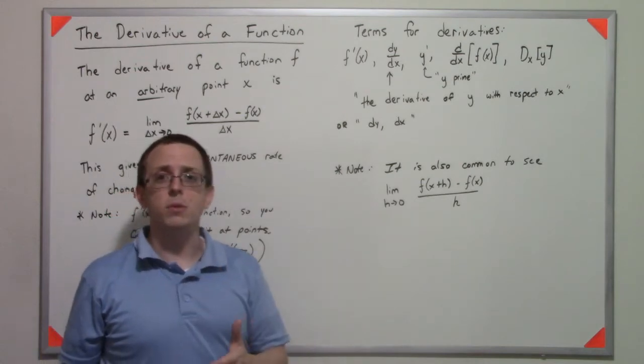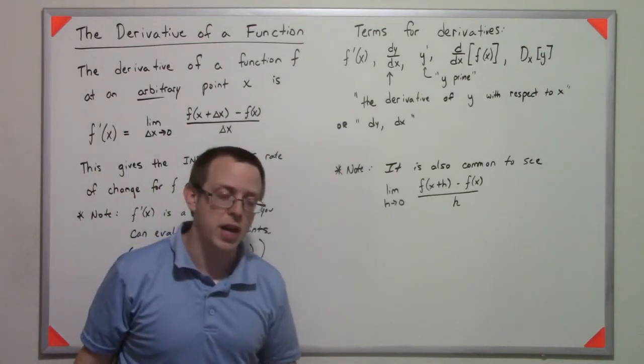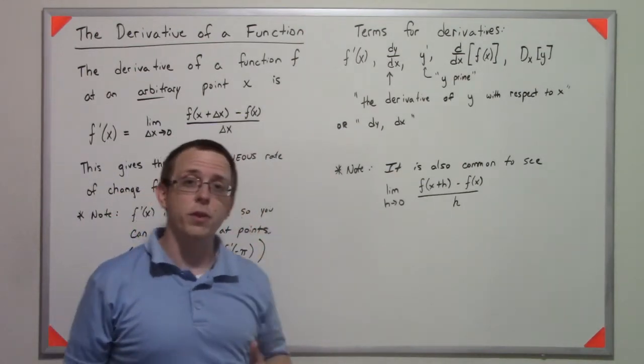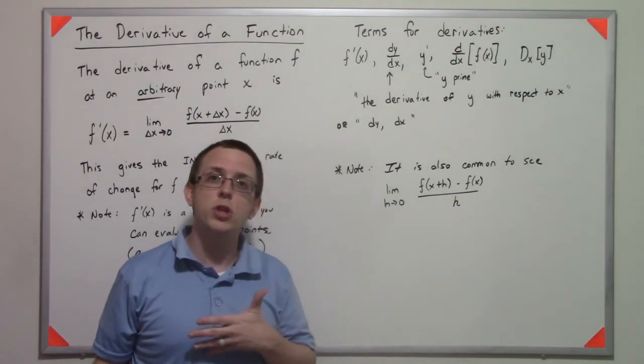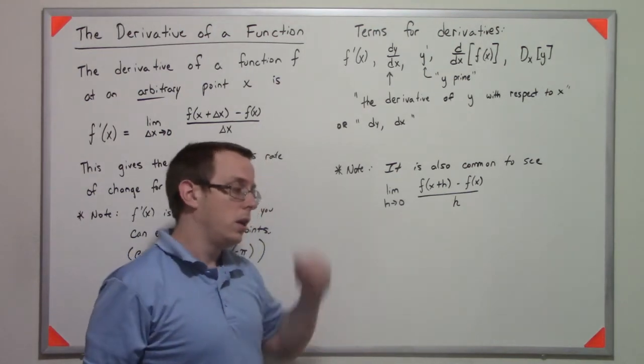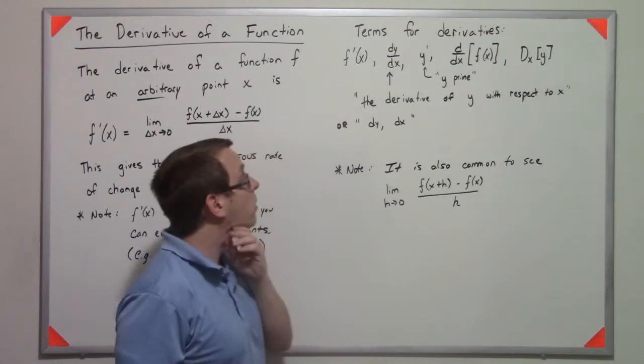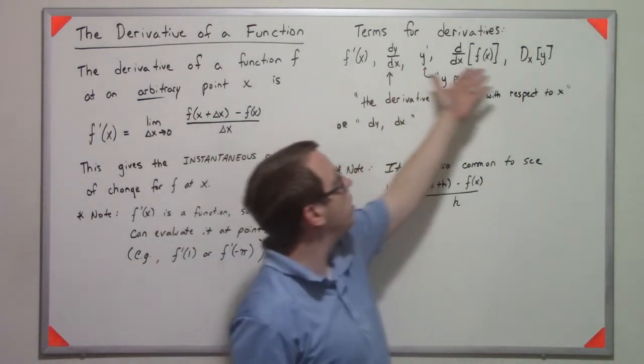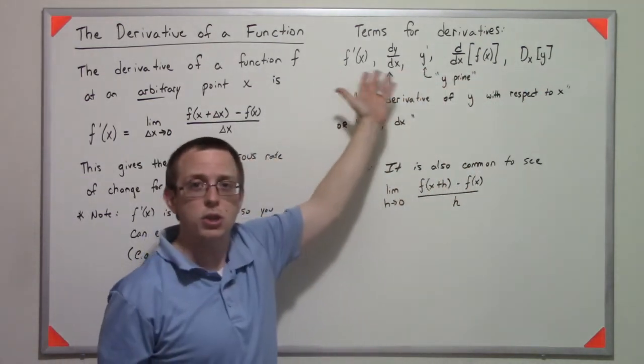So there's a number of ways that we talk about derivatives. There's a bunch of notations. And the reason for this is because there was no standard notation when this first came about. In fact, there's even another notation here that you don't see unless you take like physics and engineering.